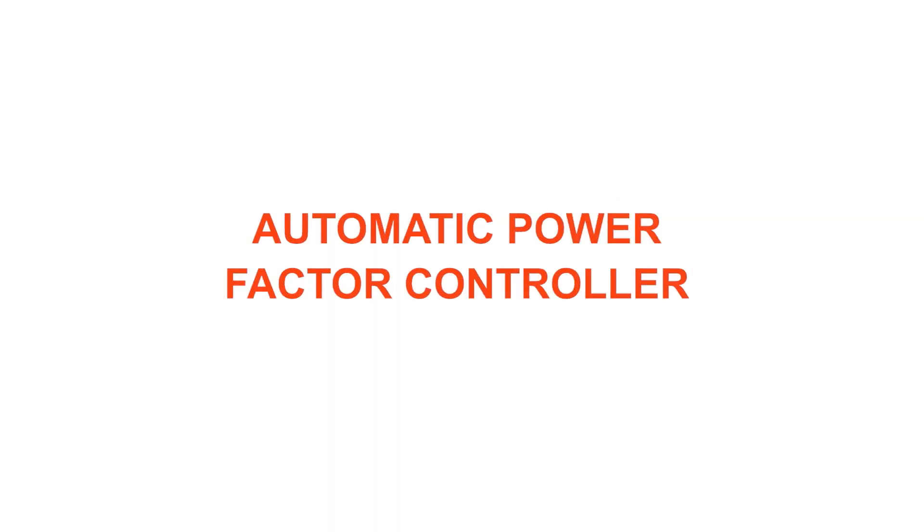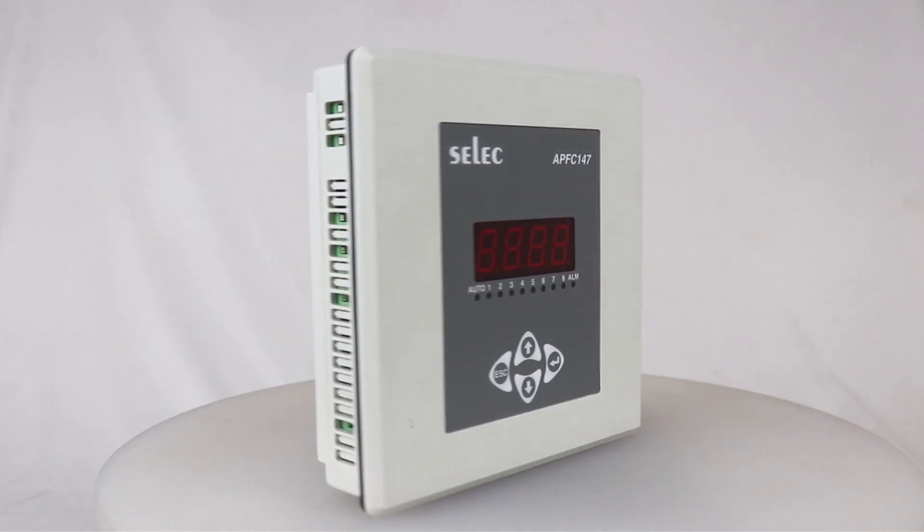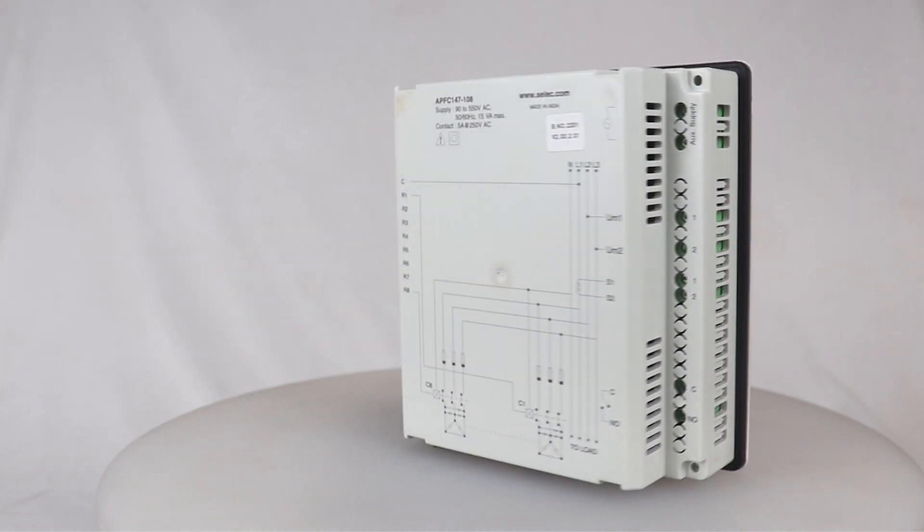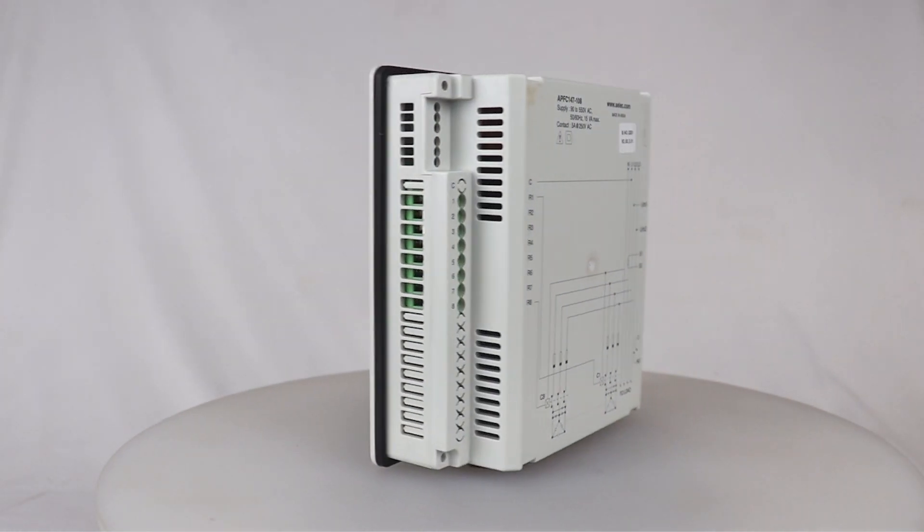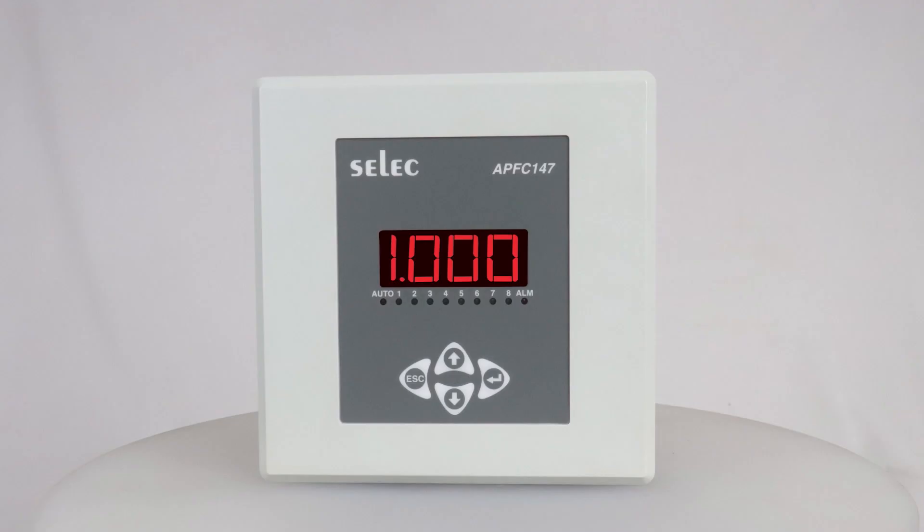Introducing Select Automatic Power Factor Controller APFC-147, designed to automatically turn power factor correction capacitors on or off to maintain a desired target power factor under varying load conditions on the low voltage distribution systems of industrial, institutional, and commercial facilities.